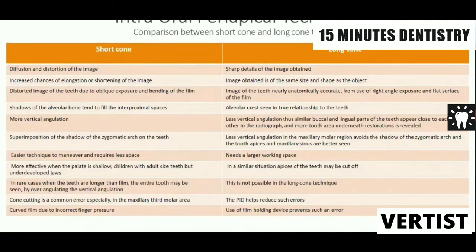The short cone is an easier technique that requires less space, while the long cone needs a larger working space. The short cone is more effective when the palate is shallow — especially in children with adult-size teeth but underdeveloped jaws. In the long cone, teeth may get cut off in similar situations. In rare cases where teeth are longer than the film, the short cone allows the entire tooth to be seen by over-angulating the vertical angulation, but this is not possible with the long cone. Cone cutting is a common error with the short cone; this does not happen with the long cone because the PID also has a positioning device.